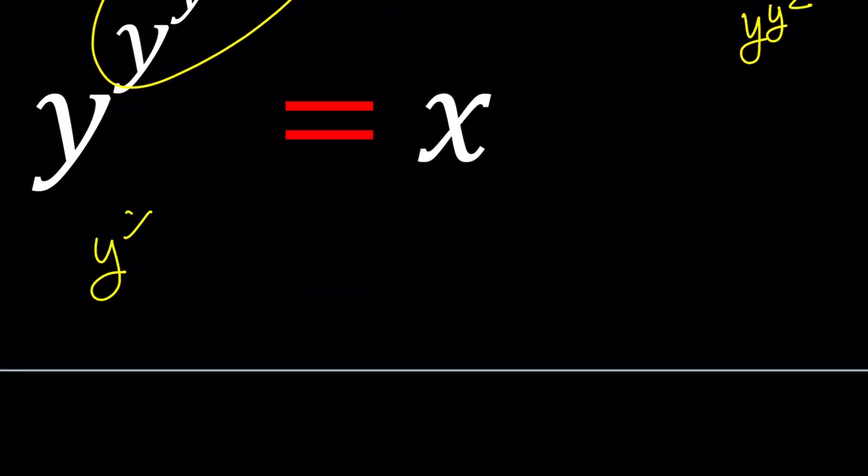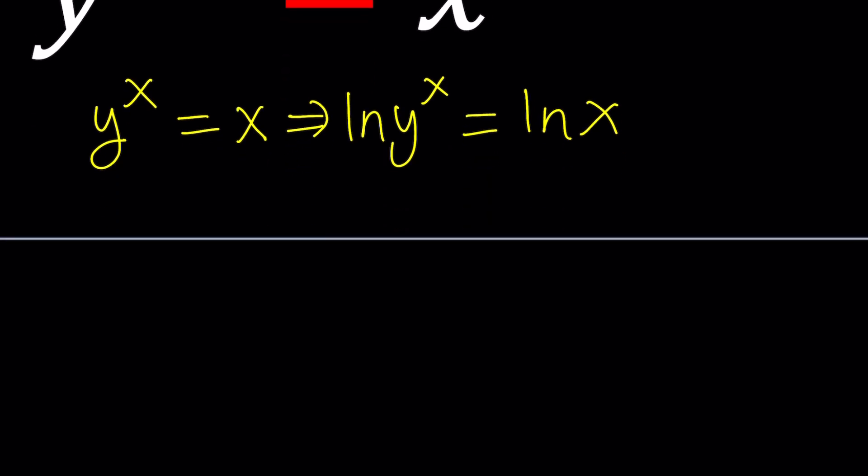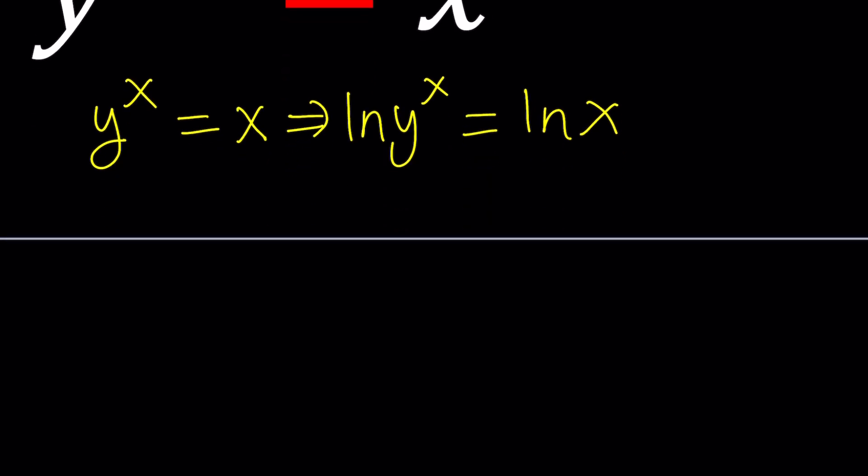This gives us y to the x equals x. Let's go ahead and natural log both sides because we are going to do a little bit of calculus to understand what's going on with this type of function. So let's natural log both sides. That's going to give us ln y to the x equals ln x. Of course, in order to be able to do that, we need to make some assumptions like y to the x is positive or x is positive, which are equal by the way.